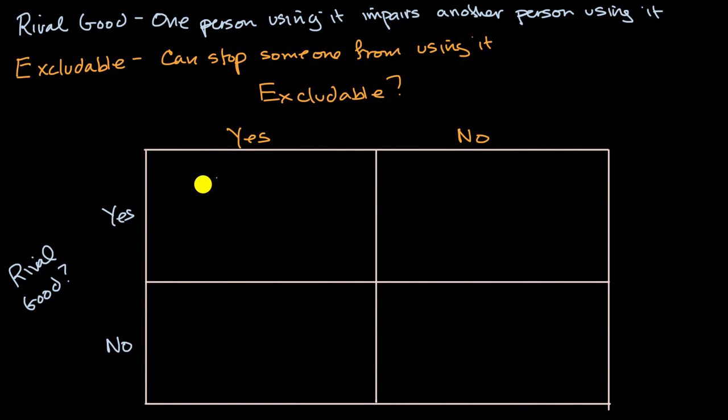So let's start in this first top left cell. So what are examples of things that are both excludable and rival goods? Pause this video and see if you can think of any. Well, actually, many of the things that we imagine buying or using fall into this top left category. Things like, let's say bananas. Bananas are for sure excludable. I could prevent someone from taking my banana. You have to pay in order to have access to a banana. And it for sure is a rival good. If I have a banana, especially if I eat that banana, well, that's definitely going to impair your ability to eat that banana.